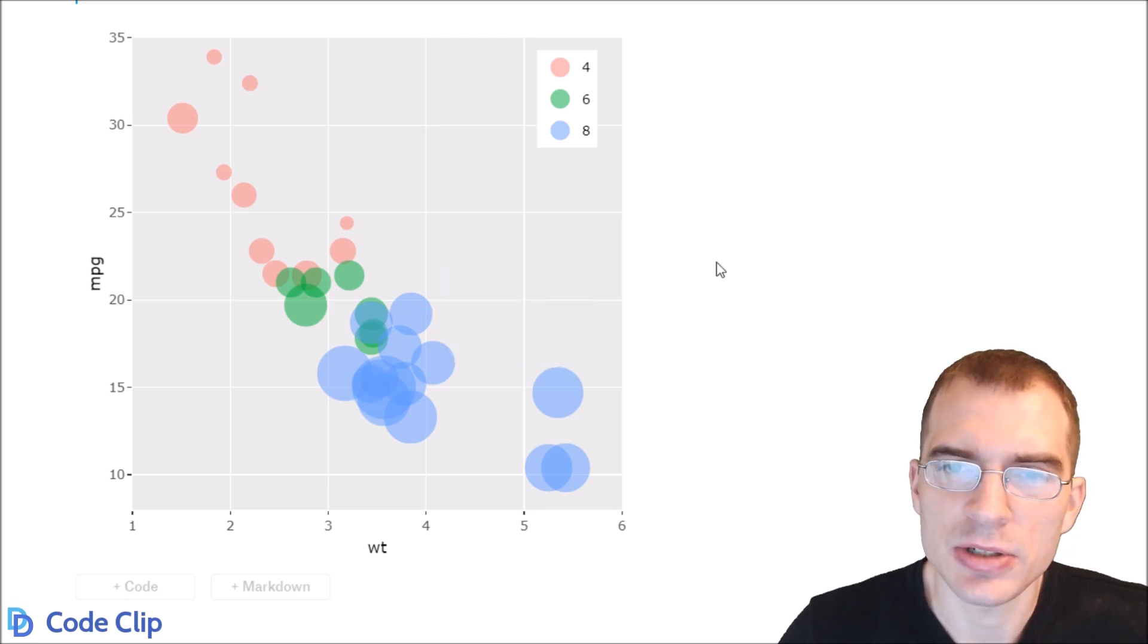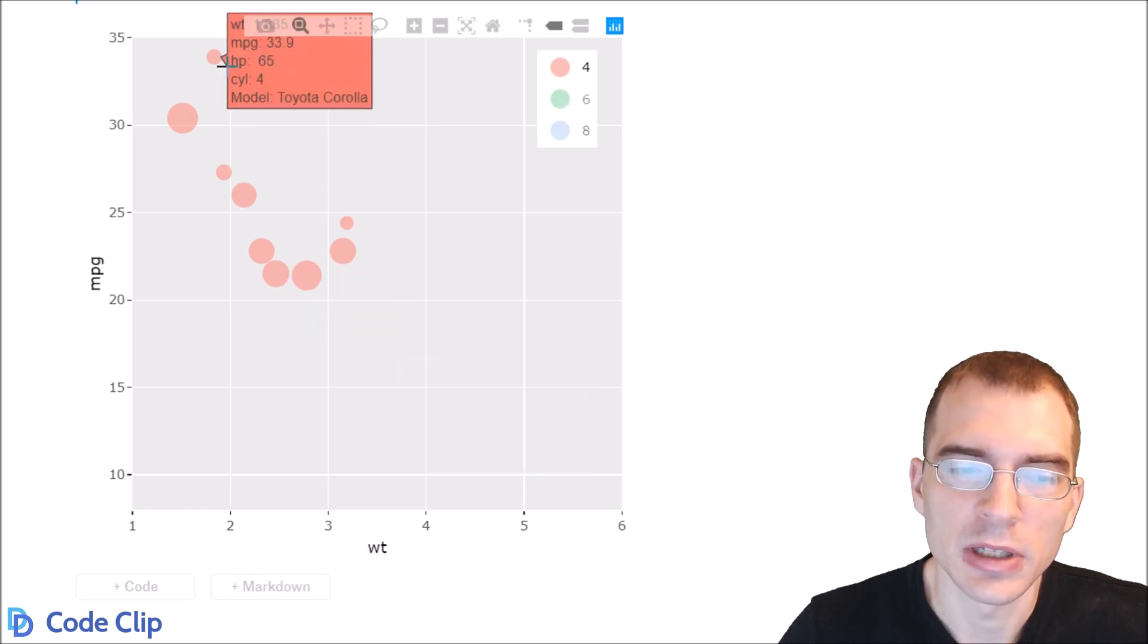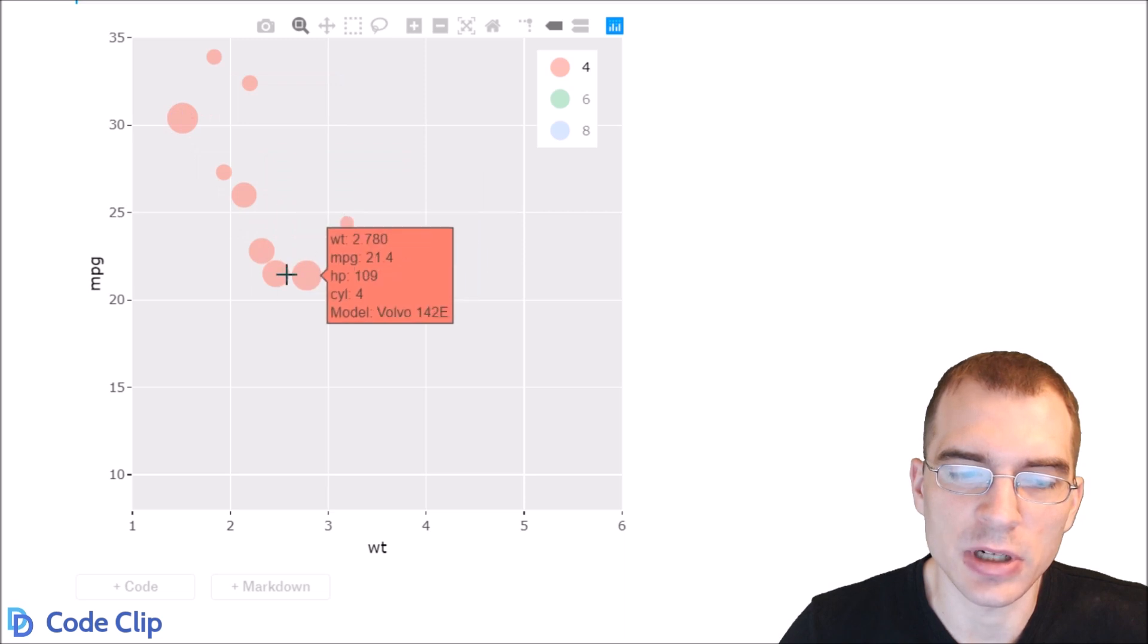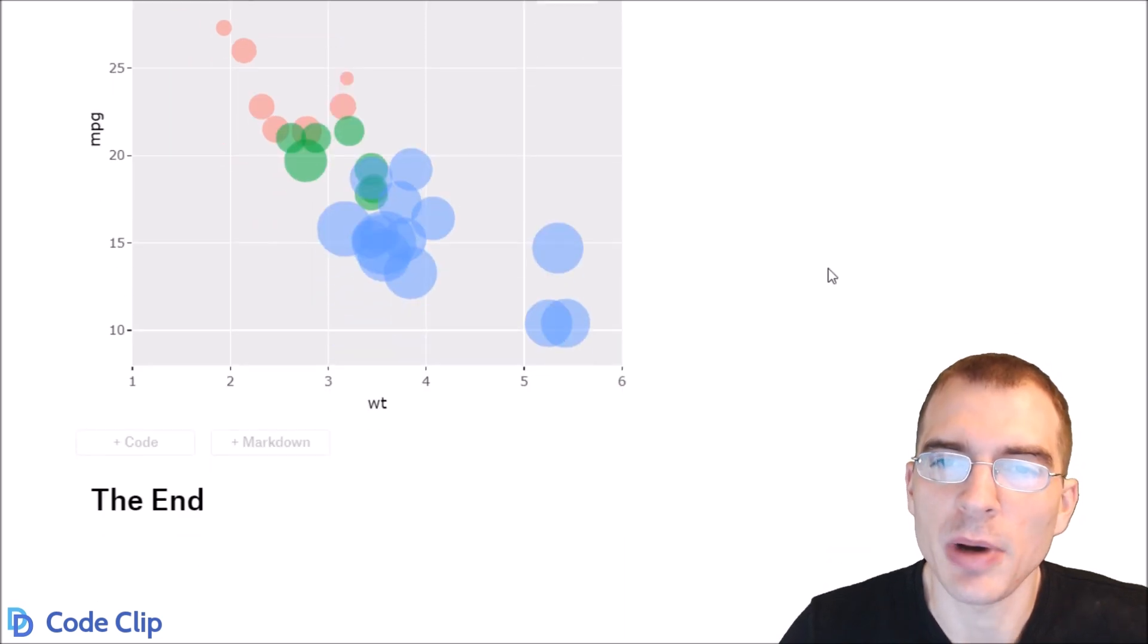You can actually interact with the legend to toggle different groups on and off as well. So if we only wanted to see four cylinder cars we could come up to the legend and click on eight and six to toggle those off and now we're just left with the four cylinder cars. That is how to make bubble plots using R.